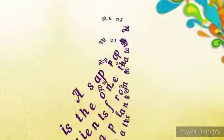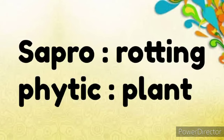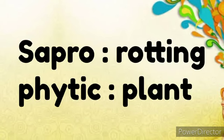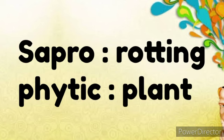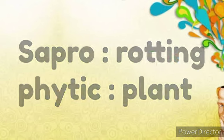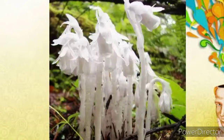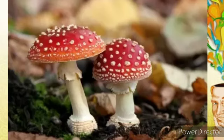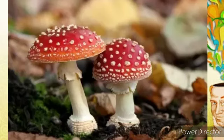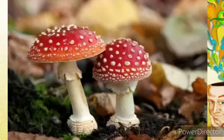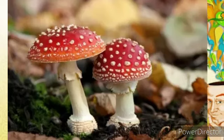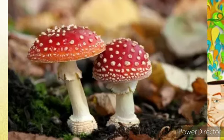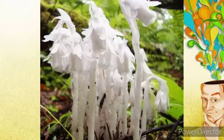Saprophytic plants get all their nutrients from dead and decaying matter. The word comes from sapro meaning 'rotten' and phyton meaning 'plant.' Saprophytic plants are usually whitish in color, though some can have brightly colored flowers. These plants often have no leaves at all and frequently grow in deep shade in tropical forests. Examples include Indian pipe and coral roots.